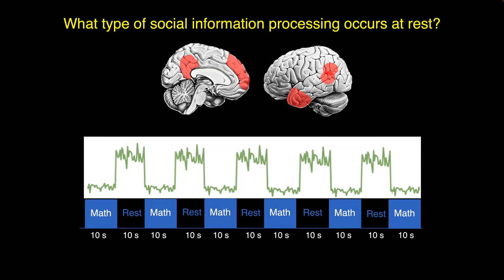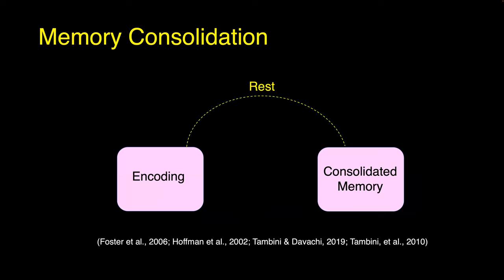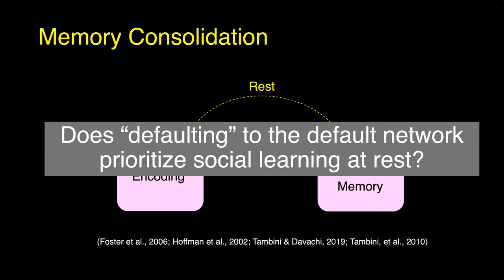But precisely what that something is still remains vastly underspecified. We really don't have a clear model of what kind of social information processing might be going on by default at rest. This gap is actually really surprising because findings like these have been replicated for over 20 years — it's a really robust result. It's also surprising because a lot of the time we are just chilling, mentally mind-wandering and relaxing. One social cognitive process that we think might be going on during rest is memory consolidation, and this hypothesis builds off of earlier memory research. The key question driving a set of experiments in my lab is: does defaulting to the default network prioritize social learning during rest?